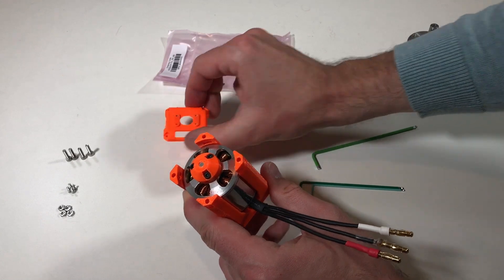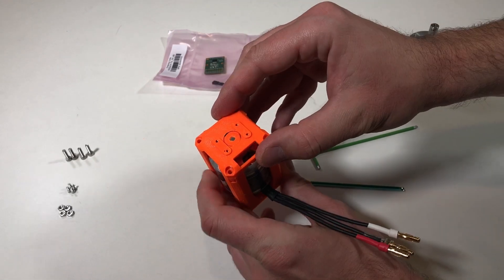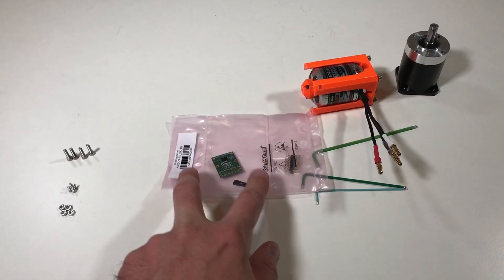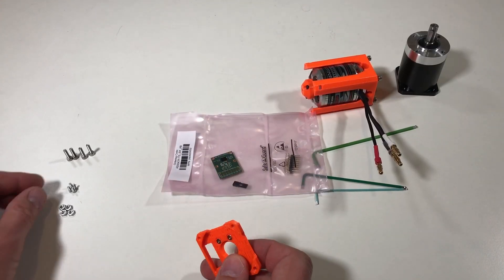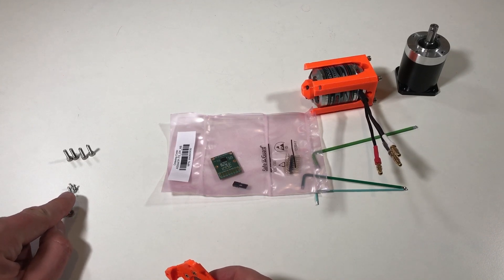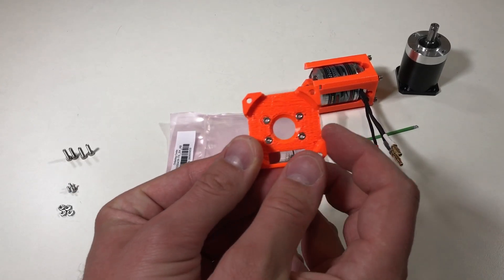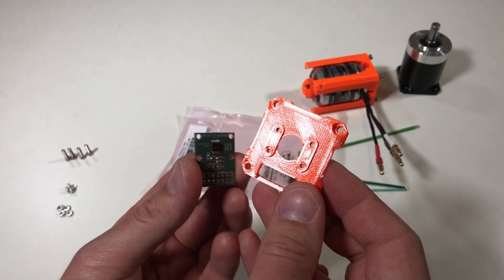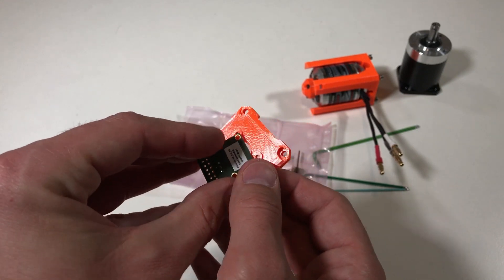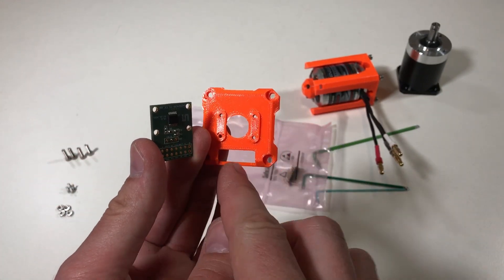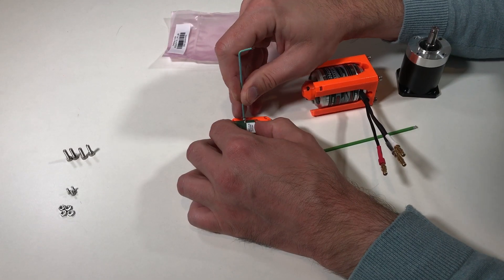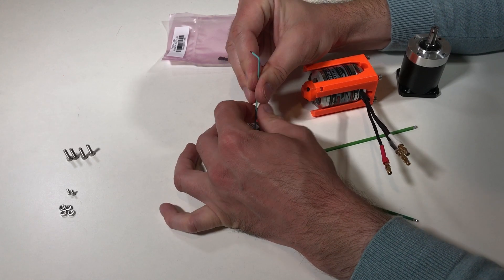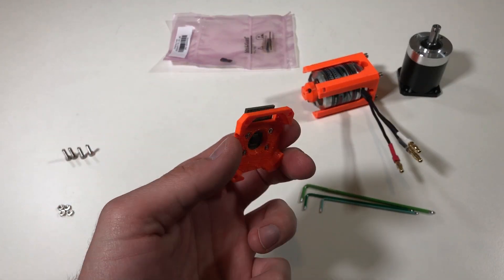And now we need to install this back plate with the encoder. So first of all we need to install the encoder on this plate. This is the encoder. And to install it I'm going to use these small tiny M2 screws. I already put here four nuts. And so now this encoder goes here. And the connector part should be here.